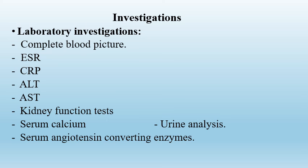Investigations for sarcoidosis include laboratory investigations, radiological investigations, and biopsy, which is the gold standard for diagnosis. Laboratory investigations include complete blood picture, which may show leukocytosis, acute phase reactants which are usually elevated (ESR and C-reactive protein), liver functions (ALT and AST), kidney function tests, serum calcium which is usually elevated, and urine analysis which may show hypercalciuria. Serum angiotensin converting enzyme may help in diagnosis but is not specific, as in most cases it is normal.